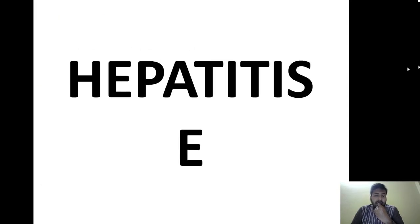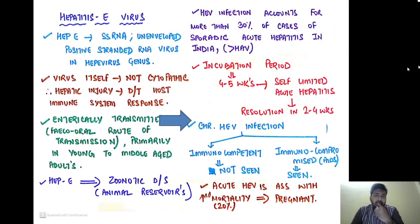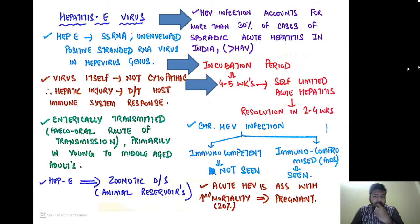Now hepatitis E. The hepatitis E virus is a single-stranded, non-enveloped, positive-stranded RNA virus belonging to the hepivirus genus. The virus is not cytopathic, so hepatic injury is due to the host immune system response. Just like hepatitis A, it is enterically transmitted via feco-oral transmission and primarily affects young to middle-aged adults. Hepatitis E virus is a zoonotic disease with animal reservoirs. It accounts for more than 30% of sporadic acute hepatitis cases in India, more than hepatitis A. The incubation period is around four to five weeks, and it is a self-limited acute hepatitis with resolution in two to four weeks.